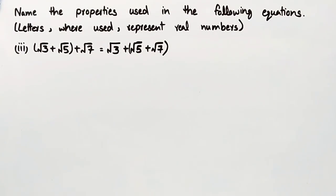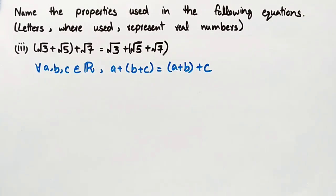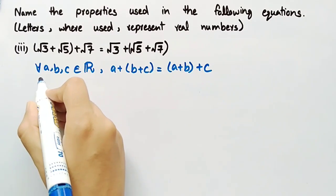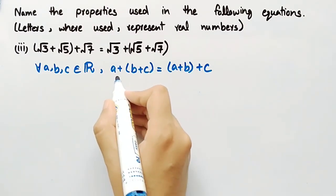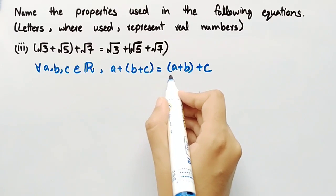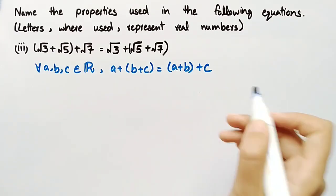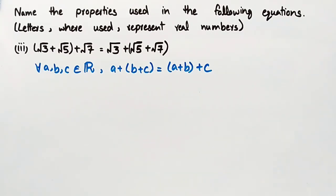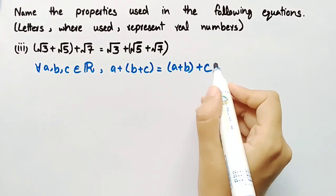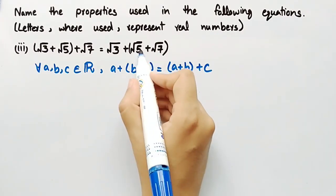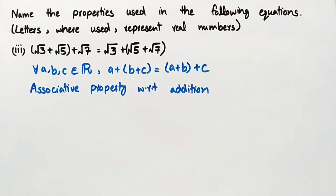The third equation is (√3 plus √5) plus √7 is equal to √3 plus (√5 plus √7). According to the associative law of addition, for all A, B, C belonging to the set of real numbers, A plus (B plus C) is equal to (A plus B) plus C. The property used in this equation is the associative property with respect to addition.